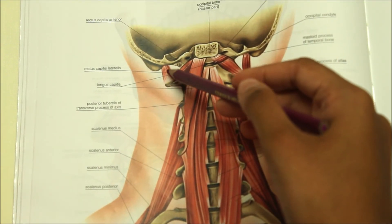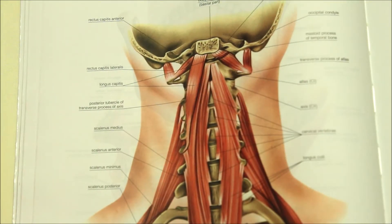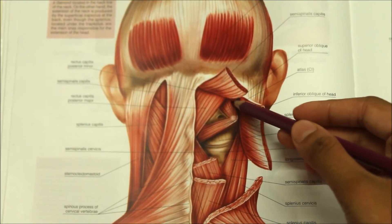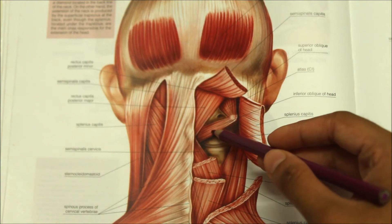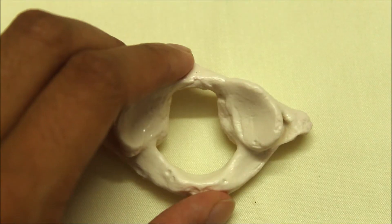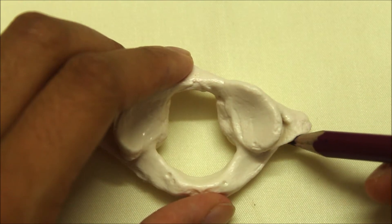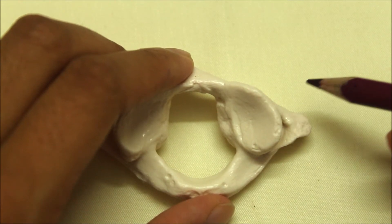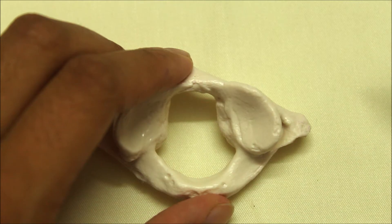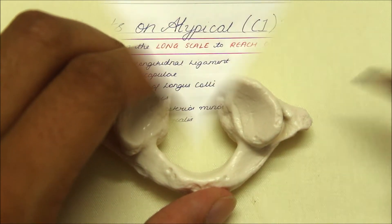The levator scapulae from the lateral margin and lower border, and the splenius cervicis and scalenus medius from the posterior tubercle of the transverse process.